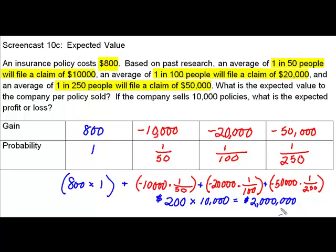If the expected value is positive, that means they're showing a profit. If it's negative, that means they're showing a loss. Based on that, you can then go ahead and compute the expected profit or loss for multiple policies, which was the second part of this problem. 200 times the 10,000 that they hope to sell would yield them $2 million in profit. Thank you for viewing this screencast.